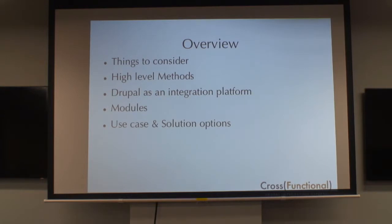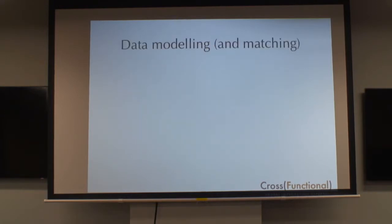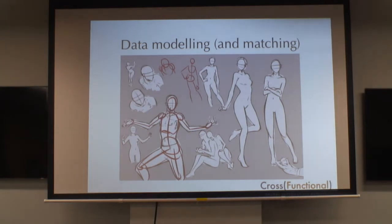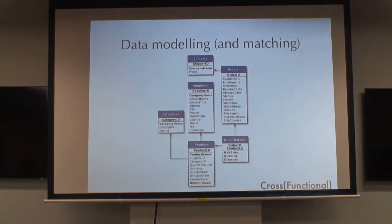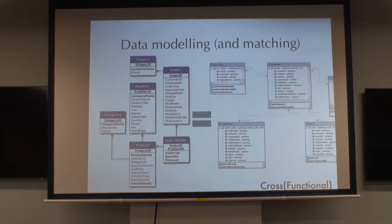The first thing, when you're thinking of an integration, is looking at the model and modeling — how your different objects and their properties connect. More specifically, what I want to look at is how you've got two different systems of data and how those are going to be equivalent to each other, or how they're going to map to each other. That in itself can be a whole exercise just to figure out.